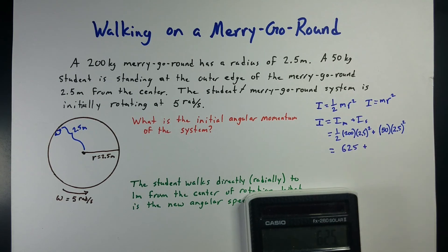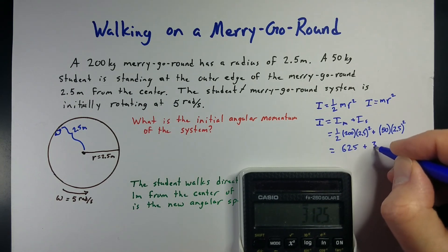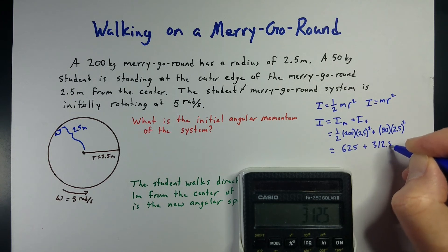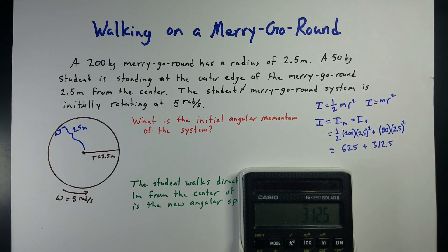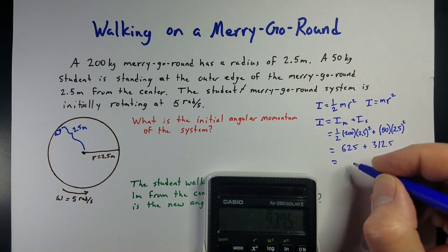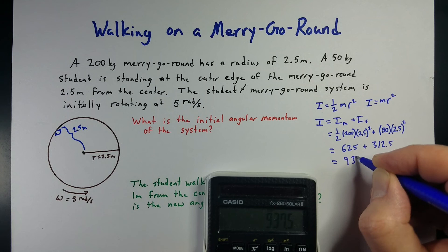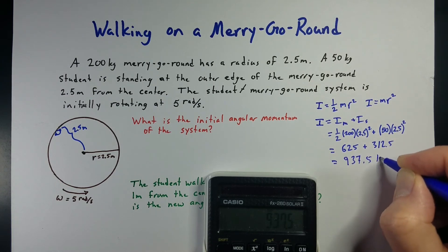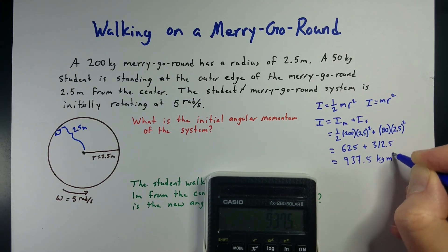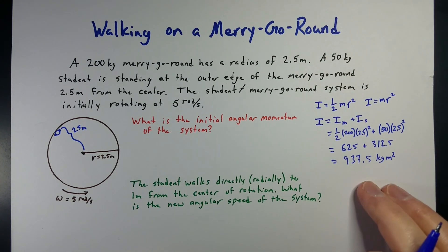Plus for the student, 2.5 squared times 50, they have a moment of inertia of 312.5. We're going to add those together, 625, gives me a total initial moment of inertia of our system to be 937.5 kilograms meters squared. I know that's a weird unit, but that is the unit for moment of inertia.